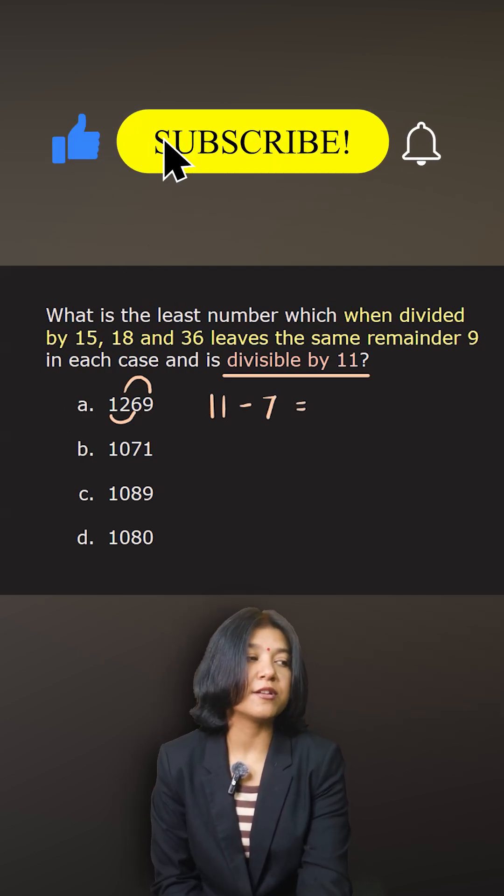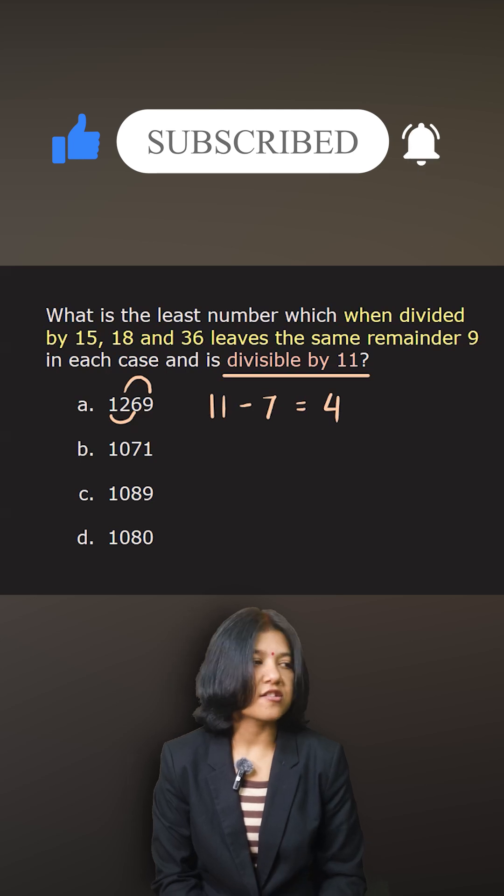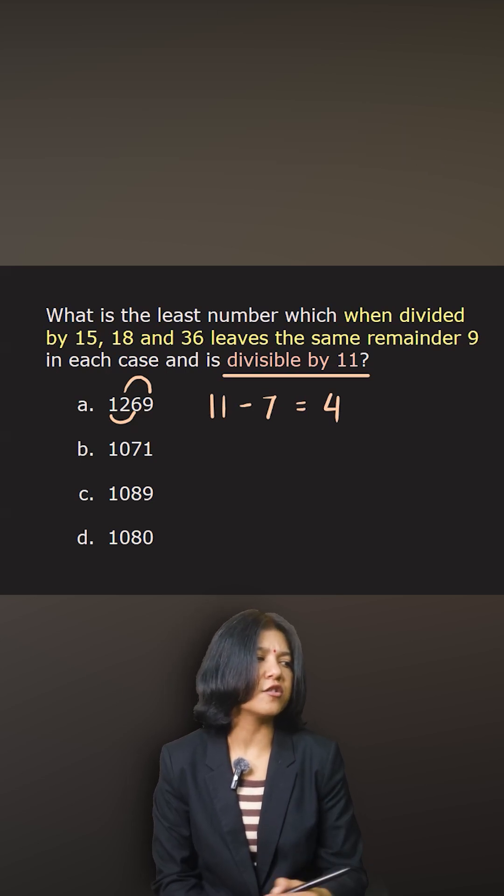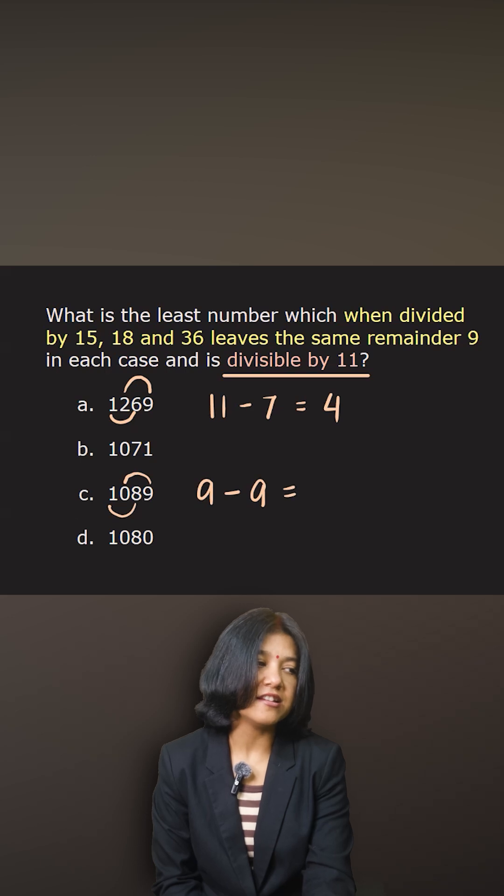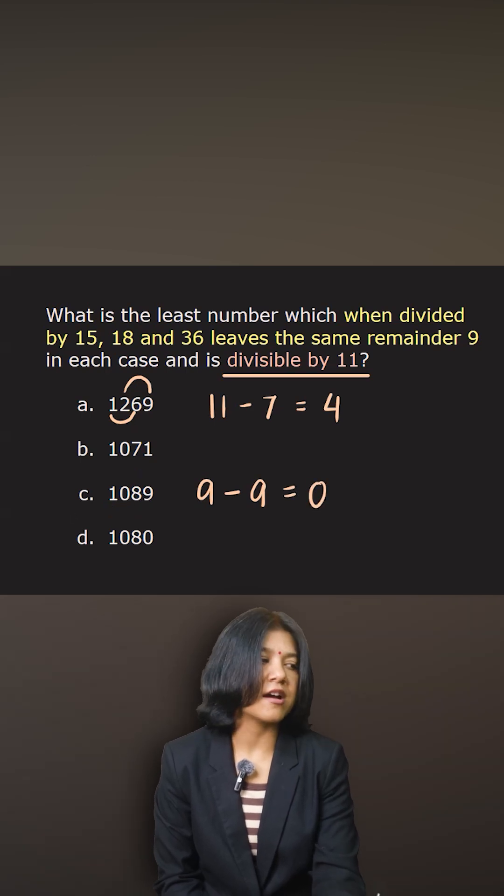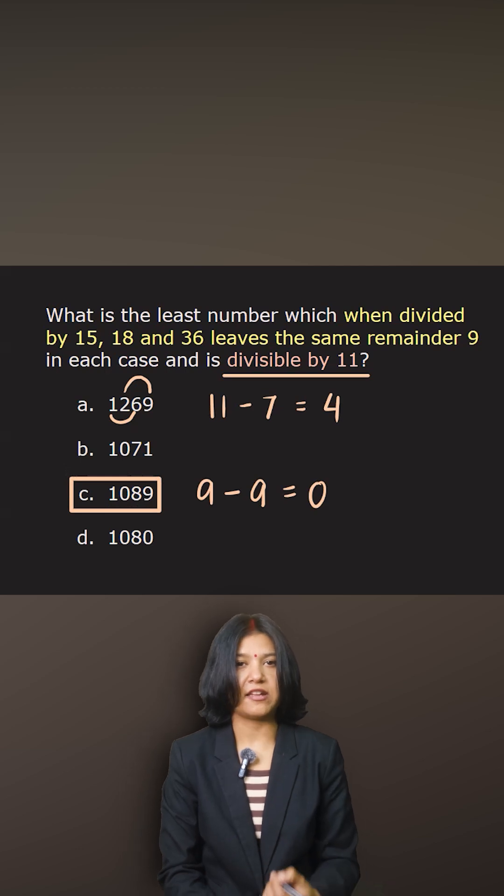So out of all the options, if you look at option C, then it's telling me that 9 plus 0 is 9, and 8 plus 1 is also 9. So the difference here is 0, and you know 0 is divisible by 11. So it's clear to me that this is the number which is divisible by 11, and no other numbers given to me have that property.